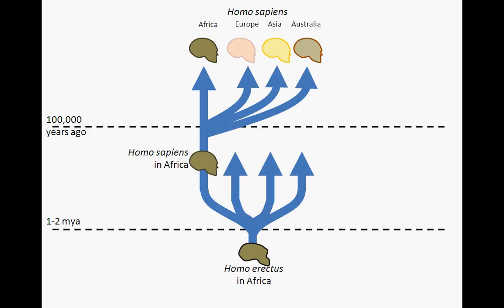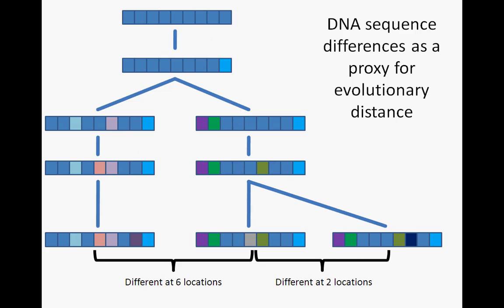While both hypotheses have their proponents, DNA sequencing technology has given clarity to the debate. Because DNA mutations occur randomly throughout the genome over the course of time, the number of nucleotide differences between two species serves as a proxy for the number of years since they last shared a common ancestor — more differences indicating more time since evolutionary divergence.